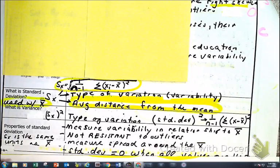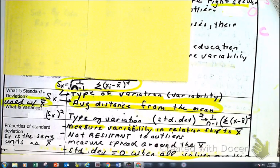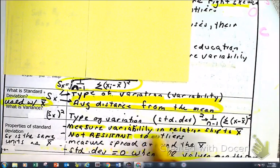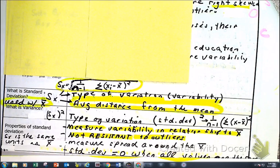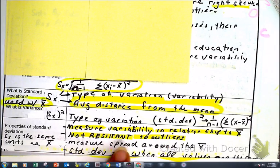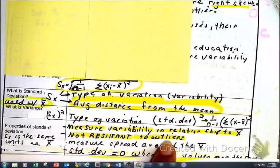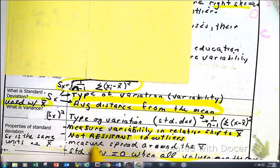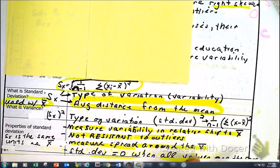When it comes to things we need to know about standard deviation: it measures variability in relationship to the mean. It is not resistant to outliers — meaning if you have an outlier or extreme value, just like the mean (x-bar is affected by outliers), the standard deviation is also affected by outliers, so it is not resistant. It's a measure of spread around the mean.